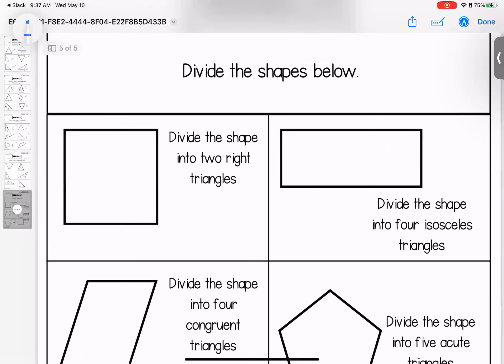Here, this is a little bit tricky. Dividing these shapes into specific types of triangles. So for this one, dividing into two right triangles. If I cut it here, I have a right angle and a right angle.